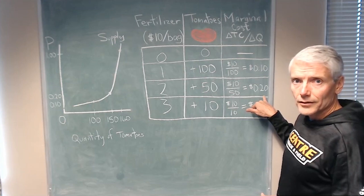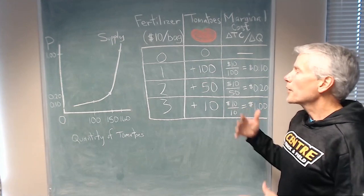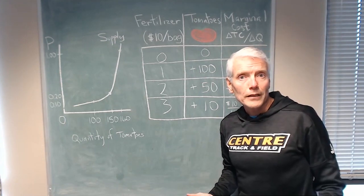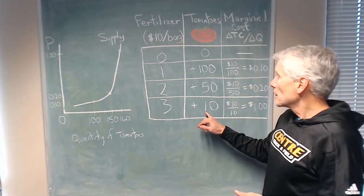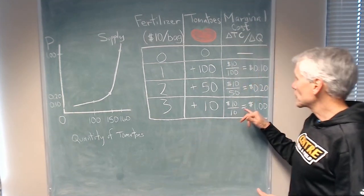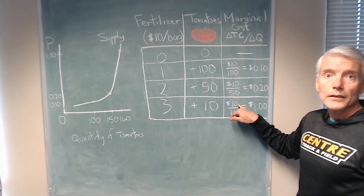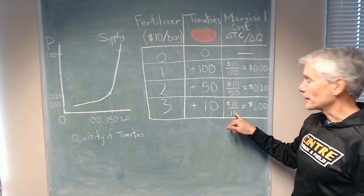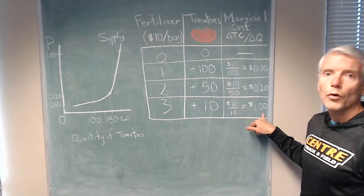The third bag doesn't contribute as many tomatoes as the first or second, but it does add 10 tomatoes. The additional cost for each of those 10 tomatoes is $10, the cost of the bag divided by 10 tomatoes, or $1.